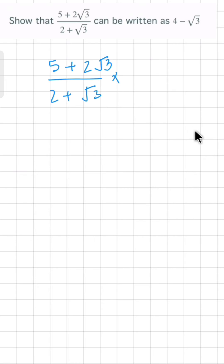To rationalize the denominator, we should multiply this whole thing by the conjugate of this number. This is 2 + √3, so let's multiply numerator and denominator by its conjugate, 2 - √3.